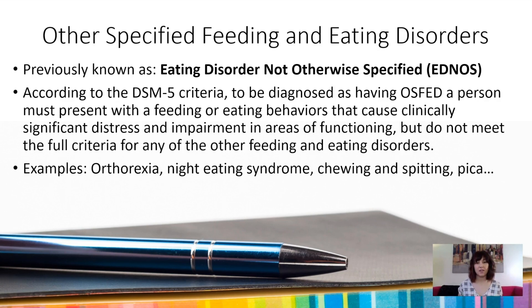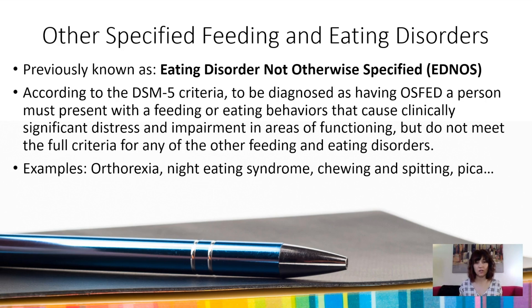Another diagnosis that tends to be a catch-all for anything that doesn't fit into one of those main three is Other Specified Feeding and Eating Disorders, previously known as Eating Disorder Not Otherwise Specified in the DSM-4. This applies when there are very defined behaviors that don't quite fit anorexia, bulimia, or binge eating disorder — for example, someone who meets all criteria for anorexia except one, or isn't hitting the frequency threshold of once a week for three months. This category also includes things like orthorexia, which is an obsession with clean or healthy eating, night eating syndrome, chewing and spitting of food, and pica, which is eating of non-food substances. There is also another diagnosis for feeding and eating disorders that can't yet be defined.